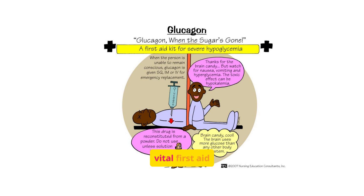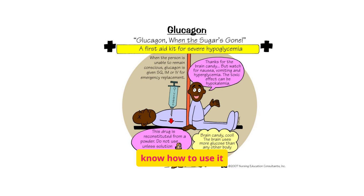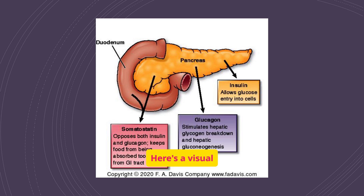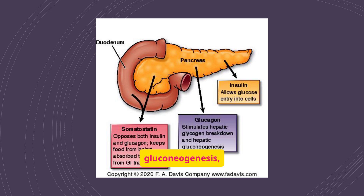Glucagon is a vital first aid tool for severe hypoglycemia. It can be administered via injection to quickly raise blood glucose levels in emergency situations. Here's a visual representation of the roles of insulin, glucagon, and somatostatin in the duodenum and pancreas. Insulin allows glucose entry into cells; glucagon stimulates hepatic glycogen breakdown and gluconeogenesis; and somatostatin opposes both, regulating the pace of food absorption.